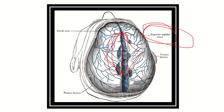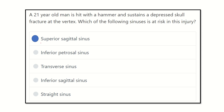So our answer is the superior sagittal sinus. It is located at the vertex area, so during a depressed skull fracture at the vertex, there may be injury to the superior sagittal sinus. The answer is the superior sagittal sinus. Thank you all.